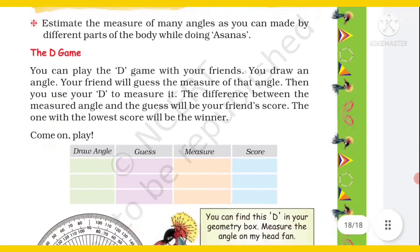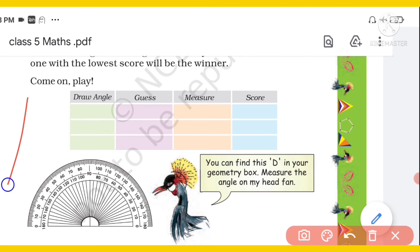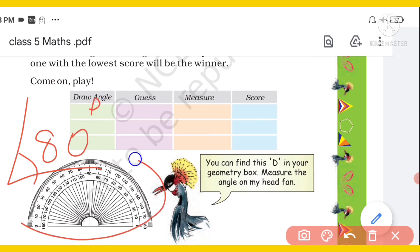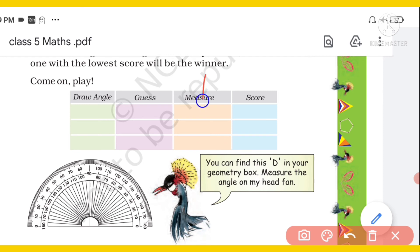Next is the D game. You can play it with your friends. You draw an angle, and your friend will guess the measure of that angle. For example, you draw an angle and your friend guesses 80 degrees. Then you measure it with the D (protractor) from your geometry box. Place the center of the D on the vertex and the bottom line of the D along one side of the angle.